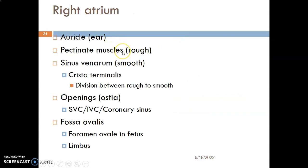The right atrium has an appendage which we call the auricle — an appendage of the right atrium called the right auricle, named because it looks like an ear. When you cut the right atrium open, you will see a rough part and a smooth part. The rough part is made up of pectinate muscles, while the smooth part is called the sinus venarum.